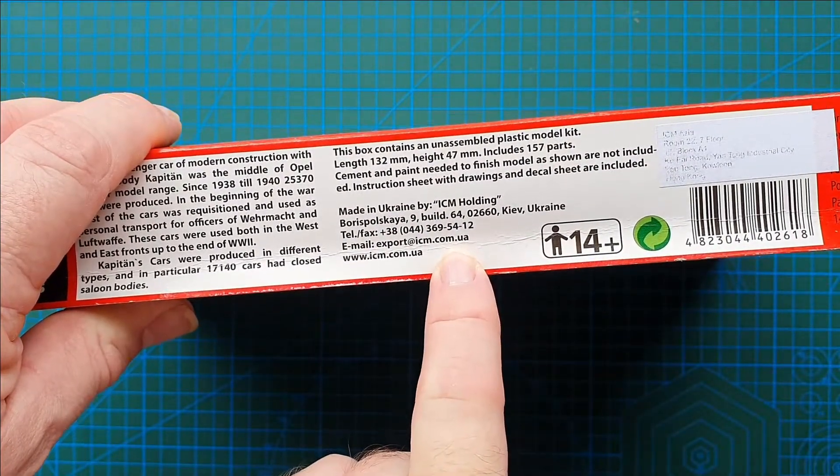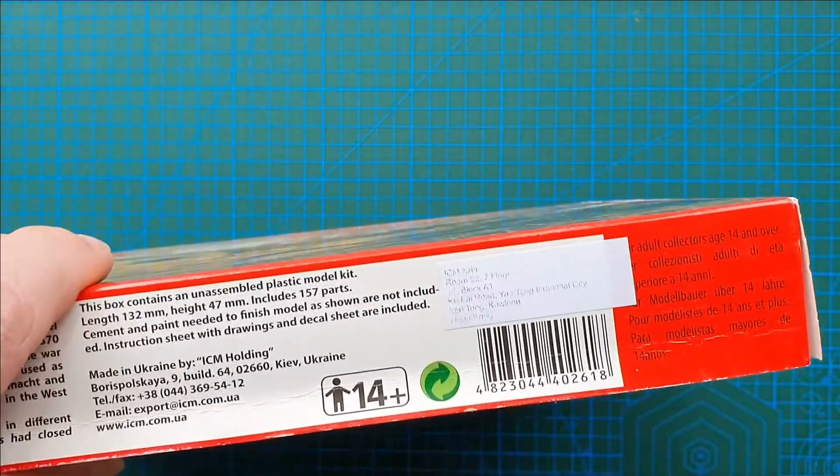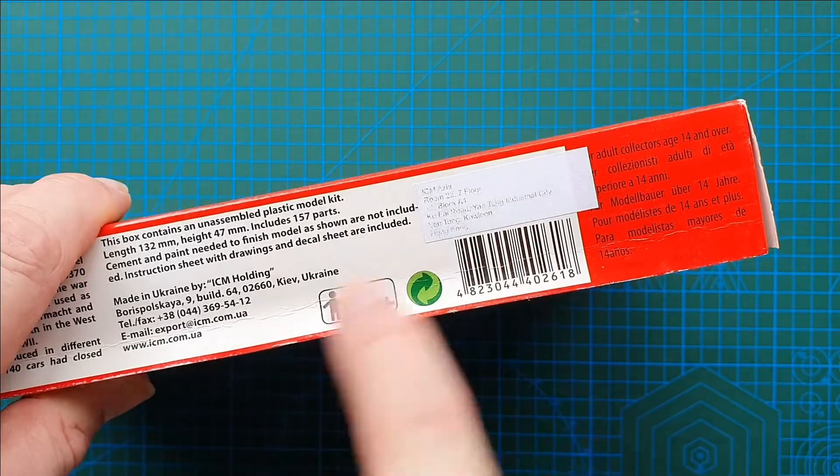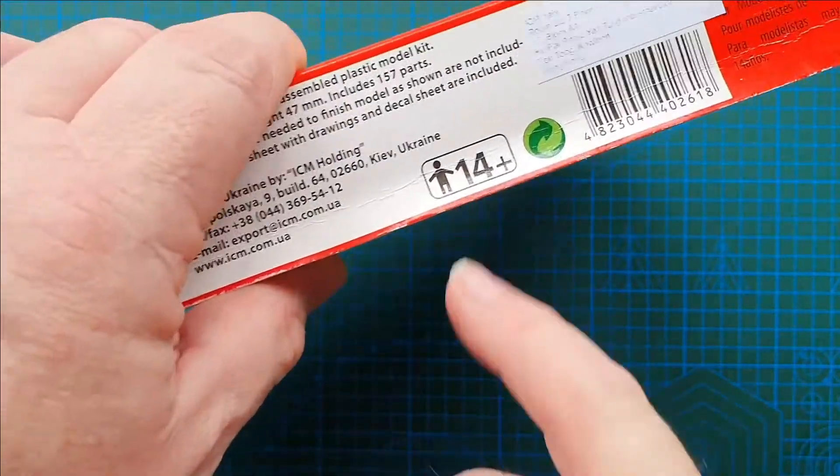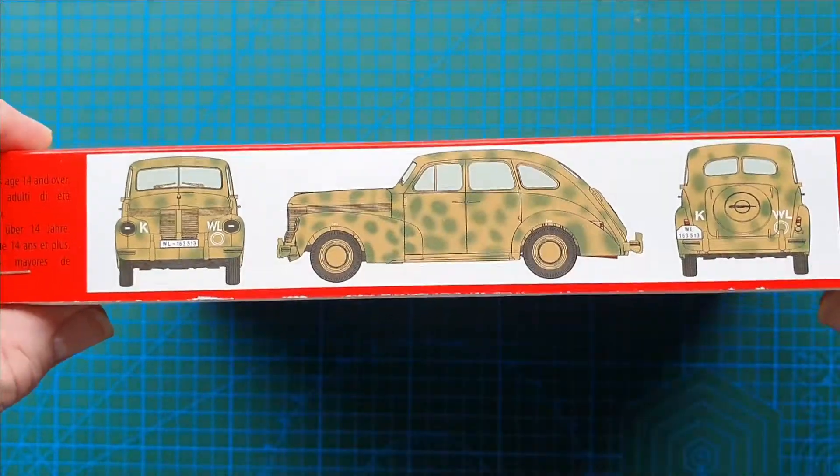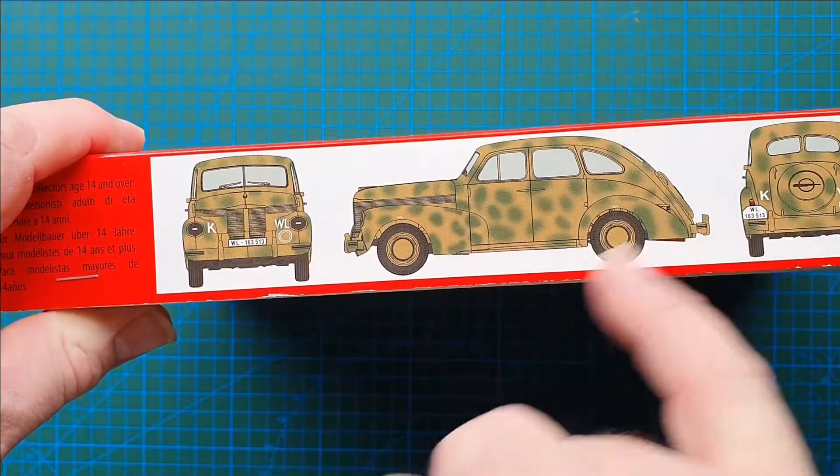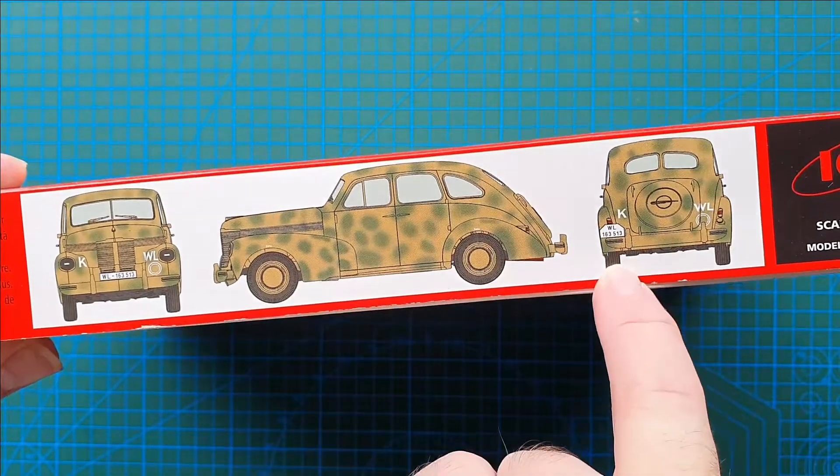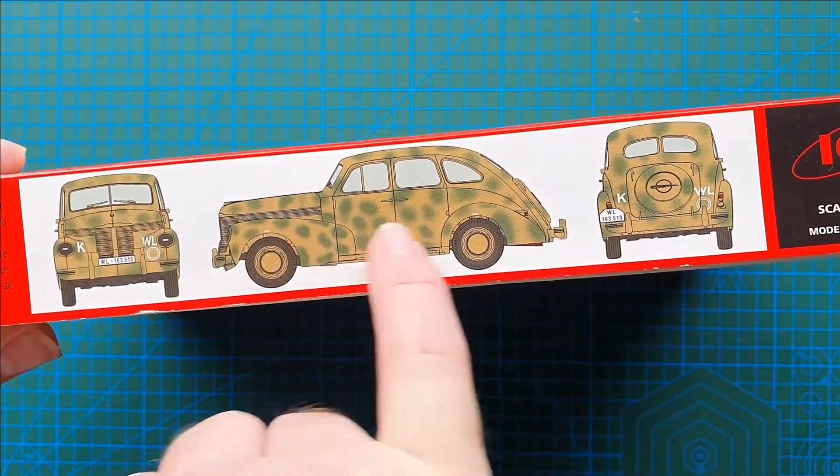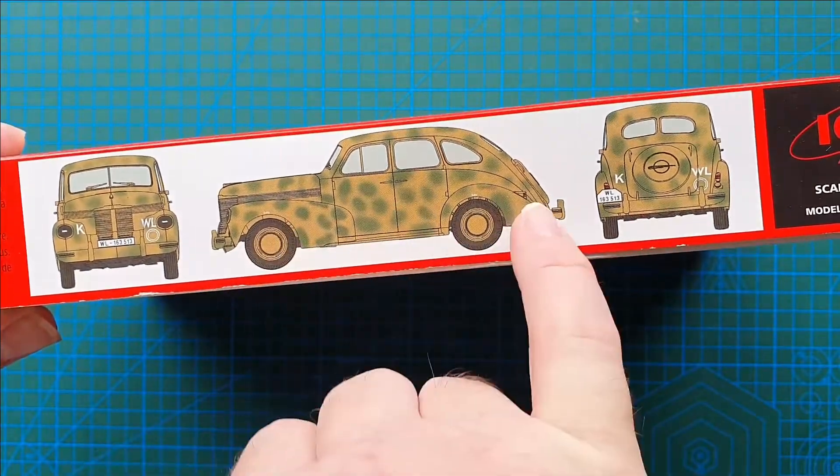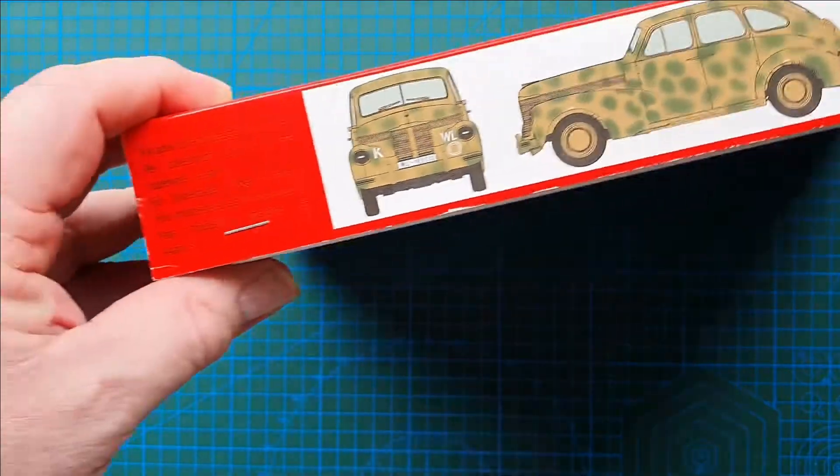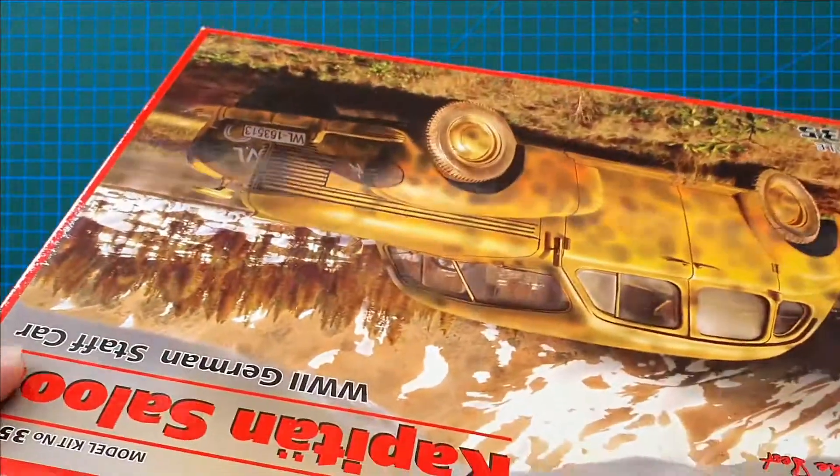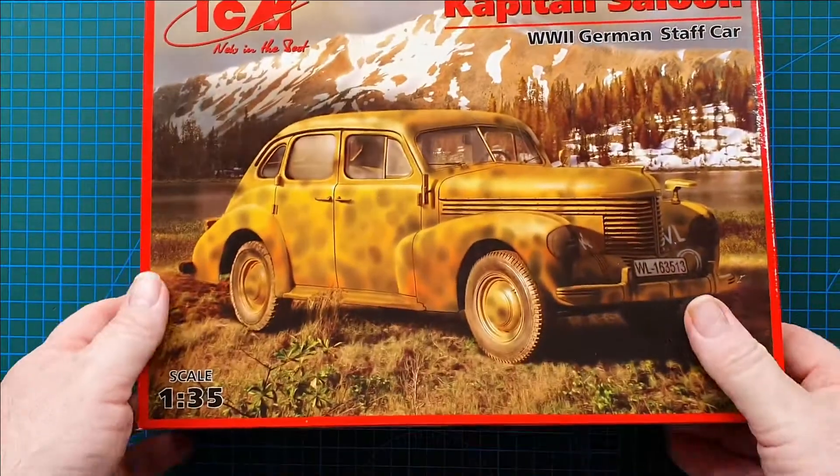ICM's address in the Ukraine. That faded little sticker there is their distributor in Kowloon. 14 plus as usual. On the other side, three views of the car itself in a Luftwaffe registration with just overall dark yellow and green splotches.